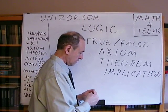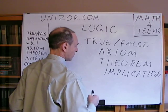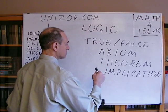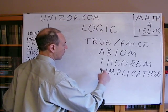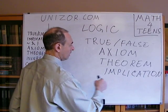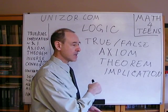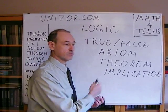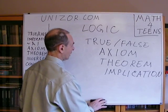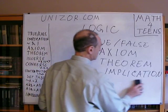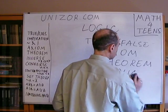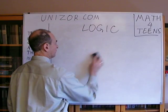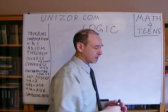Implication means that one particular statement is used to derive another statement. We say that the first statement implies the second — this is the process of implication from the first statement to the second. These are just terms we're using, and let's try to do something with these true and false statements.